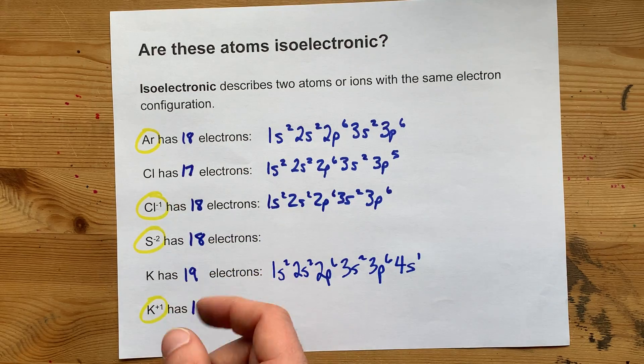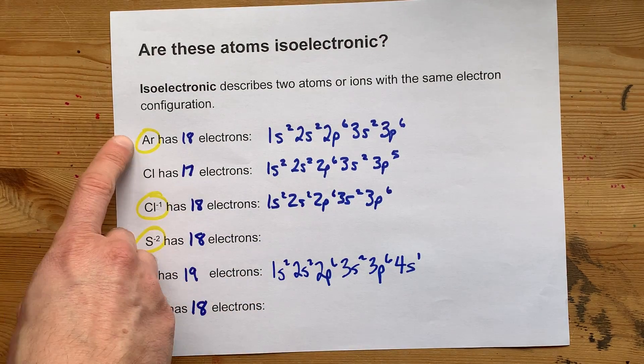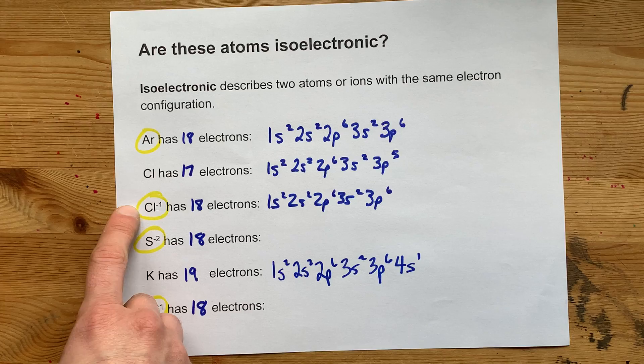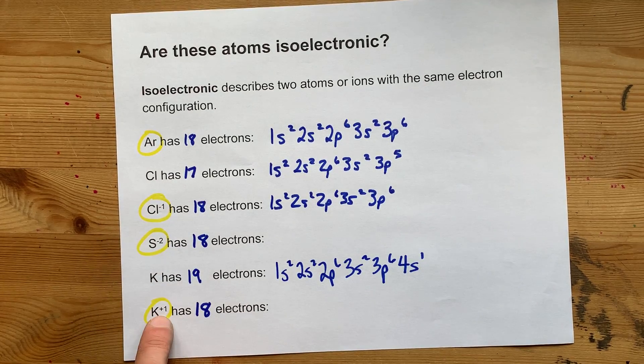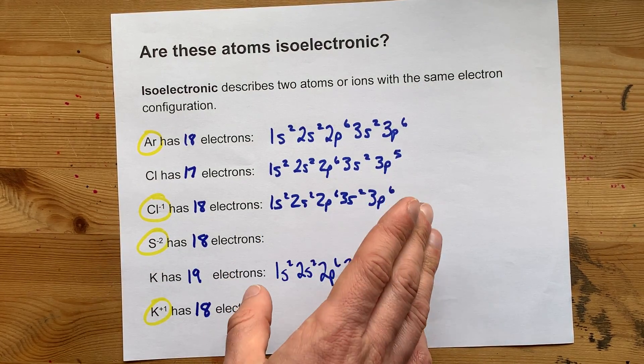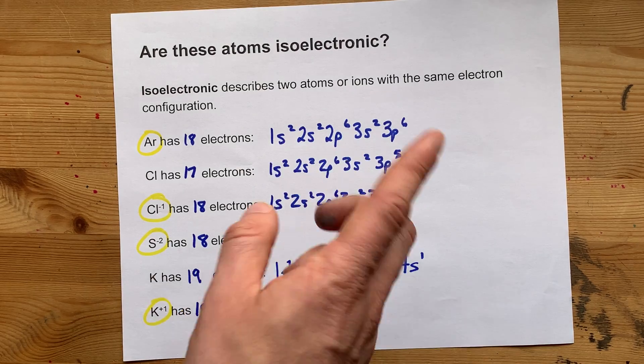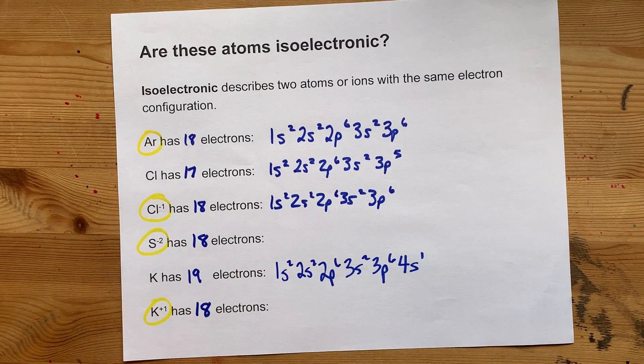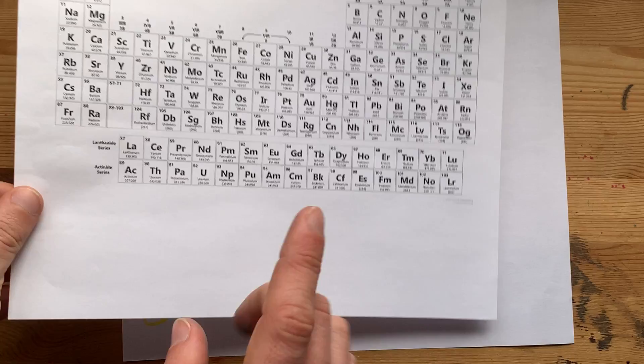Of these six particles, Ar, Cl-, S2-, and K+, all had exactly 18 electrons, so they are isoelectronic. I can keep going here.